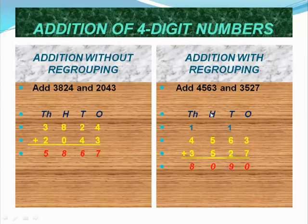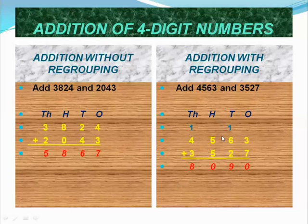Now we add the tens place digit. 1 plus 6 equals 7, then 7 plus 2 equals 9. Next, the hundreds place — 5 and 5 are there. 5 plus 5 equals 10. We write 0 in the hundreds place and carry 1 to the thousands place. 1 plus 4 equals 5, then 5 plus 3 equals 8. The answer equals 8,090. This is addition with regrouping.